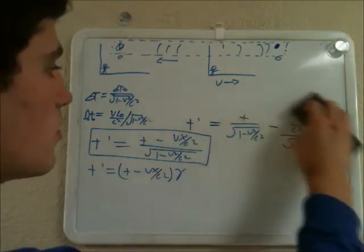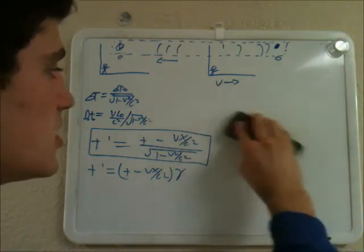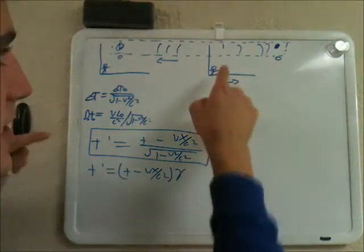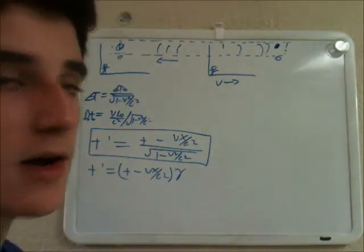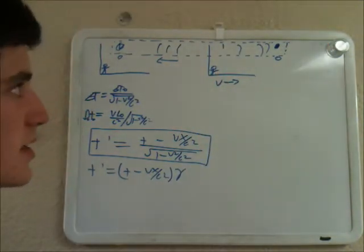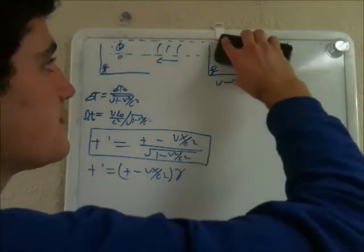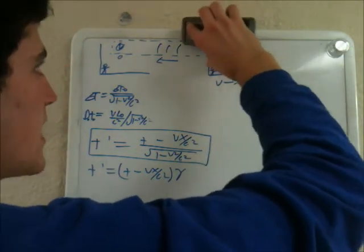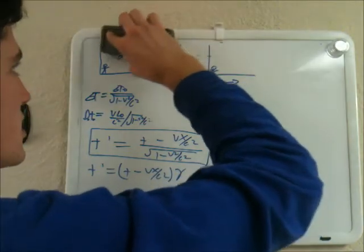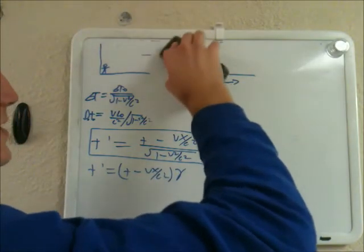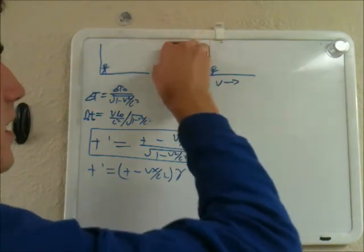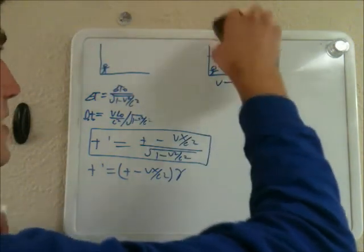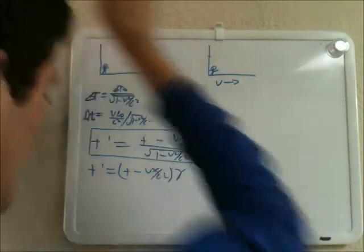That's the main Lorentz transformation, and it was relatively simple — just accounting for the desynchronization that this person sees, like we did in our train thought experiment. To do the opposite, we could just make the velocity negative and get how to convert from prime measurements of time to not-prime measurements of time.